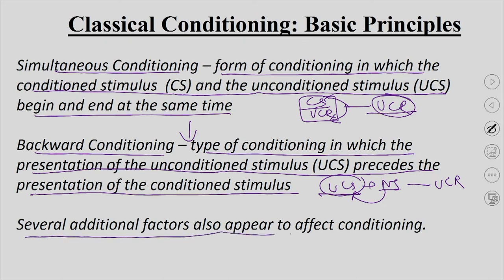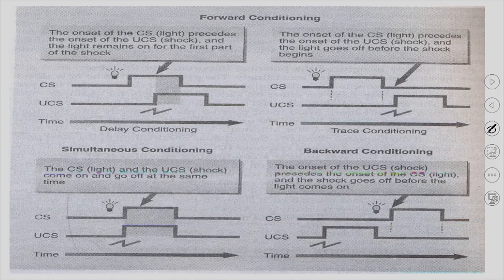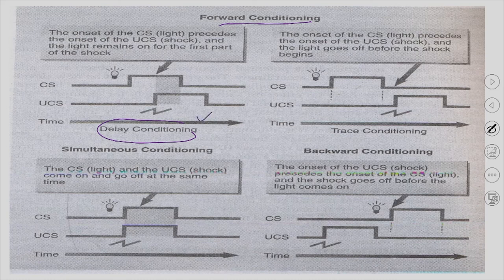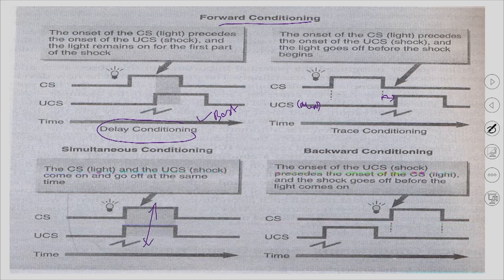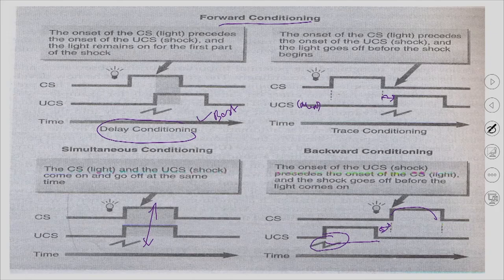Looking at the diagram of conditioning types: delay conditioning is the best, where the light precedes and overlaps with the meat. In trace conditioning there is a gap between the light and the meat, so the dog forgets. In simultaneous conditioning they happen together and the dog cannot distinguish. In backward conditioning the meat is already present and the tone comes afterwards, so the dog is busy eating the meat and cannot make any association.